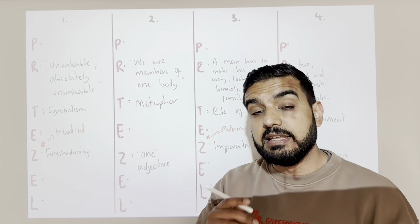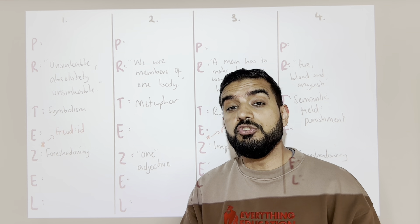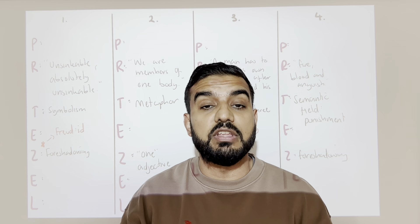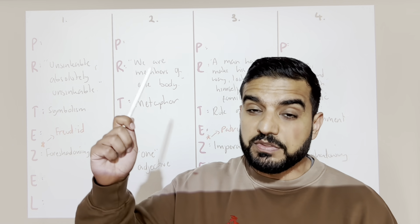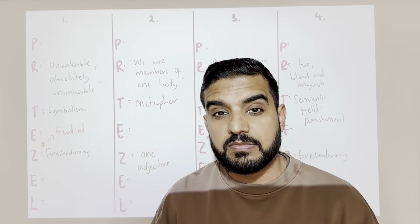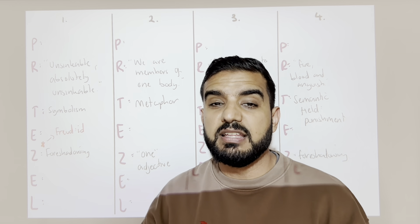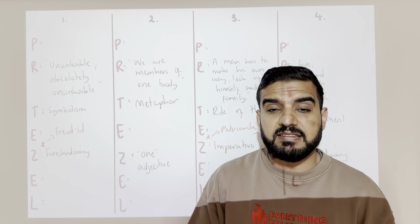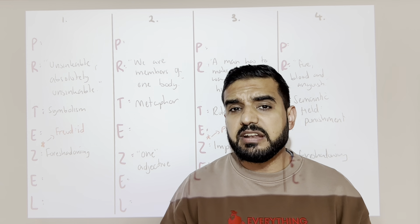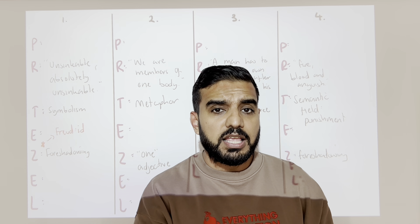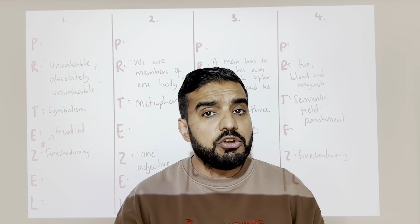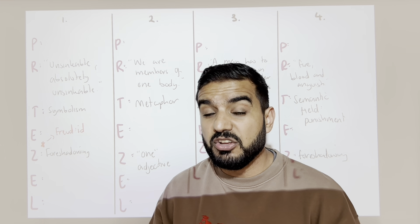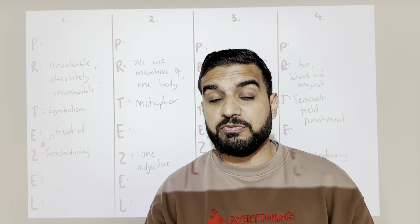I would use this quote to show how all of the characters — other than the inspector — are victims. What are they victims of? They are victims of the ideology they follow, because they all believed in this. Even Sheila and Eric believed in this to an extent. Eric arguably raped Eva Smith, so when people say Eric changes — does he really? Or does he just get exposed for who he is? He argues back with his parents, but for how long?